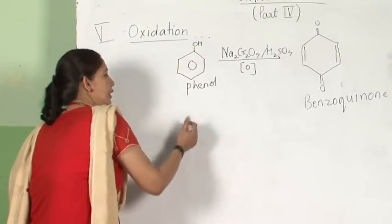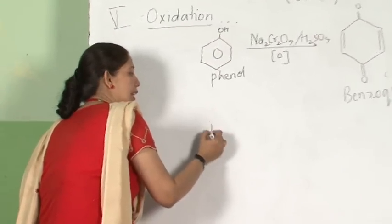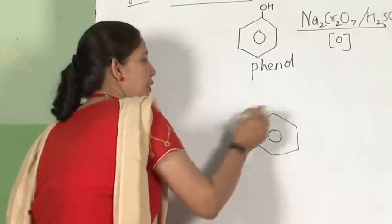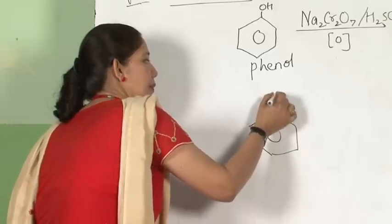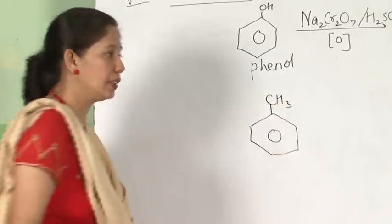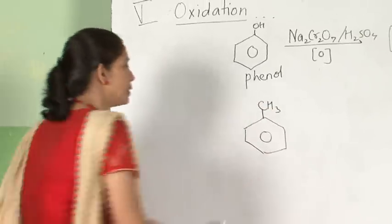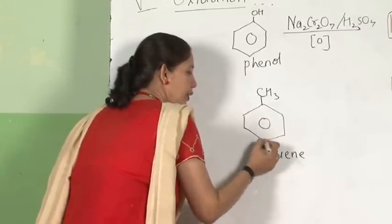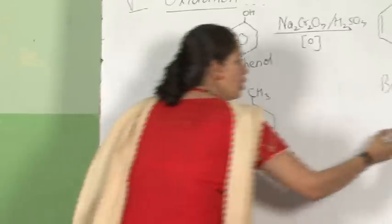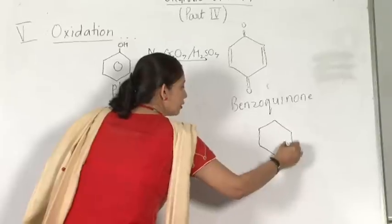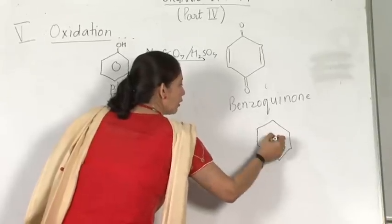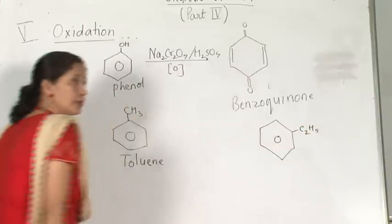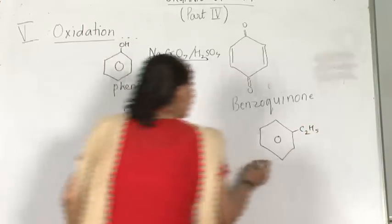I have also written one of the oxidizing agents as alkaline KMnO4. Now I have taken benzene, attaching an alkyl group — methyl — this is called methyl benzene, also called toluene. Here I am taking another alkyl group: ethyl benzene. This is ethyl benzene; this one is toluene.